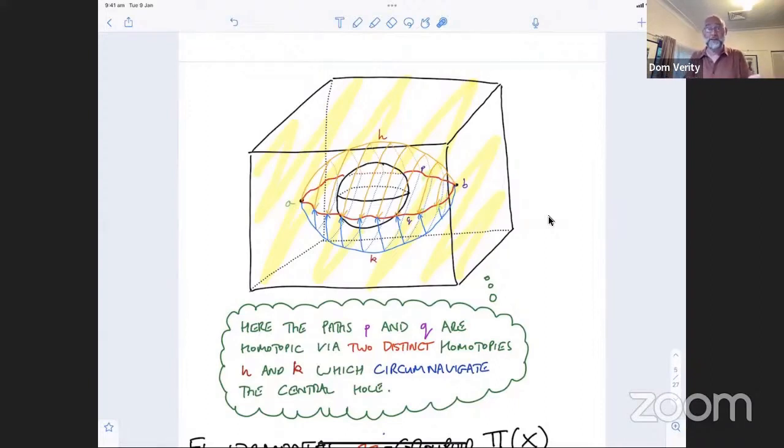Because of course, something to note about this is I said that there's not only a single homotopy going from P to Q. There's actually two homotopies, many homotopies in fact, going from P to Q. And in this case, I've drawn these two. I've got H, which is going up over the top of the sphere that I've removed, and I've got K, which is going down underneath.